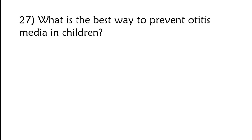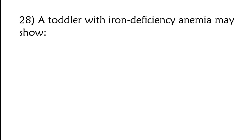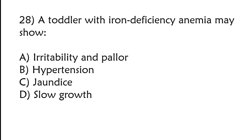What is the best way to prevent otitis media in children? Delay immunization, breastfeeding, avoid fruits, sleep in prone position. Correct answer is option B, breastfeeding. A toddler with iron deficiency anemia may show irritability and fatigue, high fontanel tension, jaundice, slow growth. Correct answer is option A, irritability and fatigue.